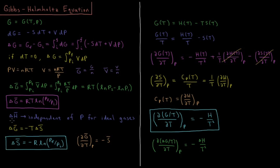During isothermal processes, the molar enthalpy change is zero, so the molar enthalpy of an ideal gas is independent of pressure. Therefore this change in molar Gibbs energy is going to be equal to negative the temperature times the change in the molar entropy.